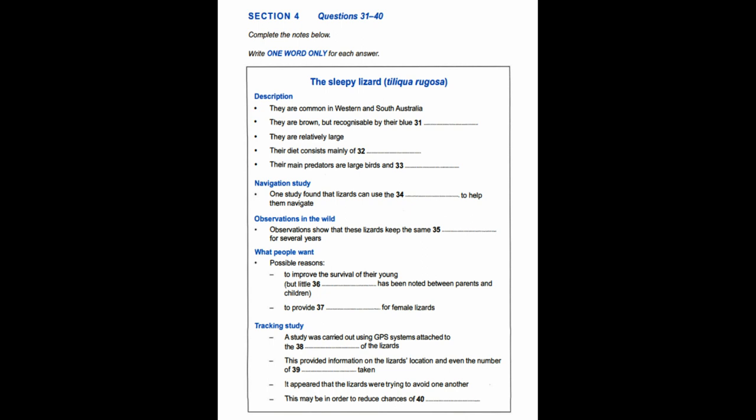Even though they're quite large and powerful with strong jaws that can crush beetles and snail shells, they still have quite a few predators. Large birds like cassowaries were one of the main ones in the past, but nowadays they're more likely to be caught and killed by snakes. Actually, another threat to their survival isn't a predator at all but is man-made. Quite a large number of sleepy lizards are killed by cars when they're trying to cross highways.